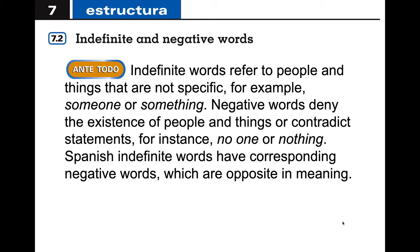This is the second portion of the grammar in Lección Siete, and we're going to look at indefinite and negative words. Indefinite words refer to people and things that are not specific — if I say 'something,' I'm using a general form of that word. Negative words would deny the existence of people and things, or contradict a statement, like 'no one' or 'nothing.'